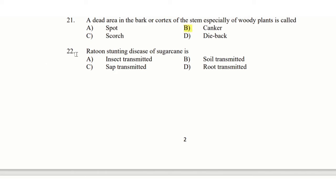22nd question: Ratoon stunting disease of sugarcane is — option A: insect transmitted, option B: soil transmitted, option C: sap transmitted, option D: root transmitted. The answer is option B: soil transmitted.